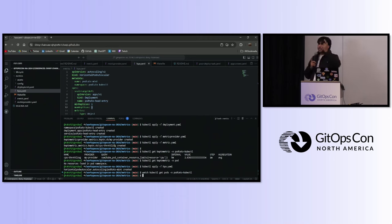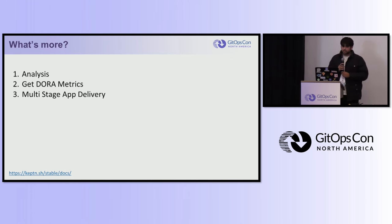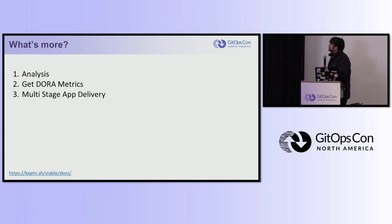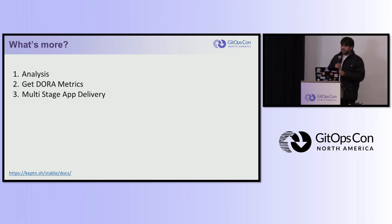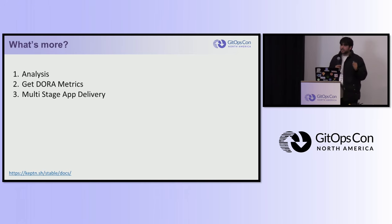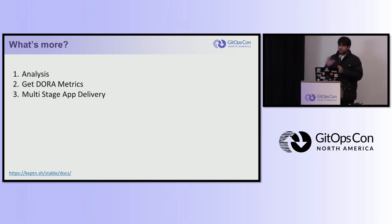These were just two functionalities that Keptn offers, but what's next? Keptn helps you define analysis definitions inside your cluster to help meet certain SLOs or SLAs. You can also get DORA metrics — Keptn can deploy Jaeger in your cluster along with a dashboard tool that lets you see DORA metrics for your application, on the basis of which you can make further decisions.